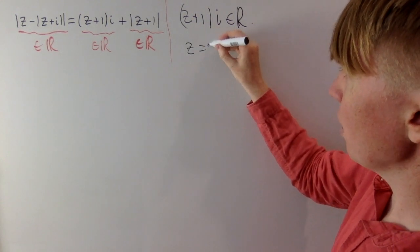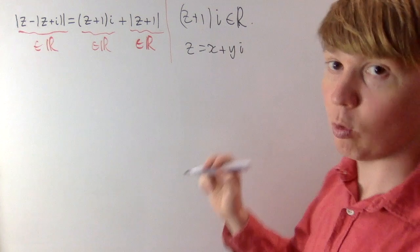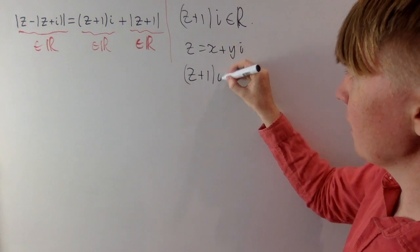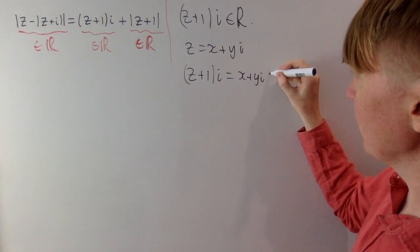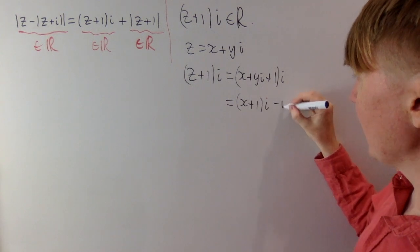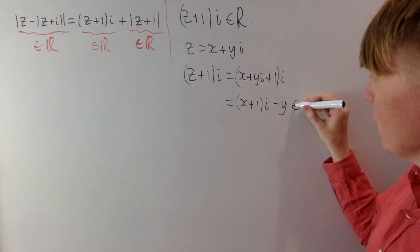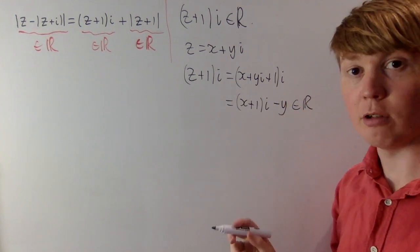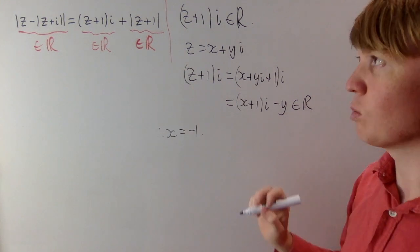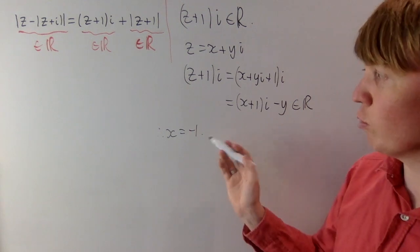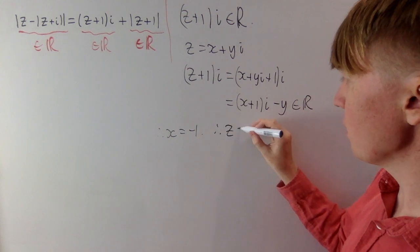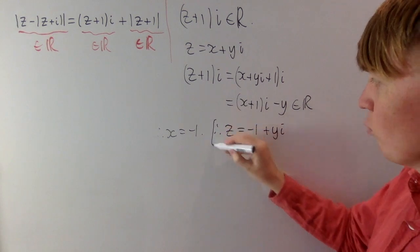If we write z as x plus yi, where x and y are real numbers, splitting into real and imaginary parts, then z plus i equals x plus yi plus i, which gives us real part x and imaginary part x plus 1. Since z plus i must be real, the imaginary part equals zero, so x plus 1 equals 0, meaning x equals minus 1. So z always has real part minus 1, meaning z is of the form minus 1 plus yi, where y can be any real number.